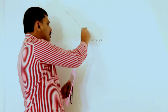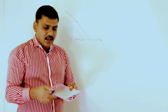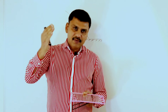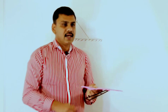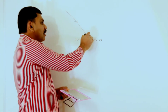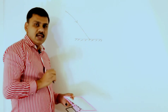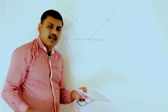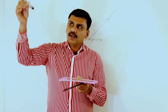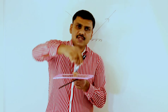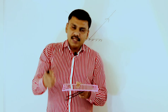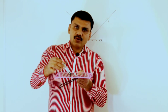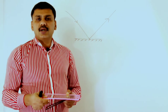A ray falling on the mirror is known as the incident ray. You mark it with a straight line with an arrow showing the direction of movement. The ray can then be reflected — it bounces back after falling on the plane mirror. That phenomenon of bouncing back to the same medium is known as reflection of light.